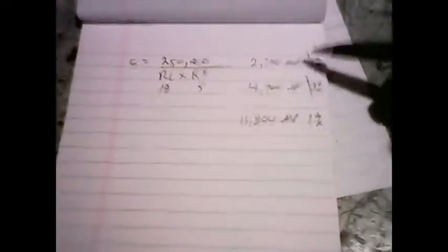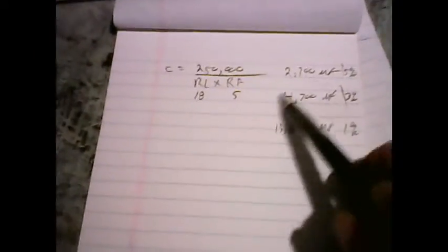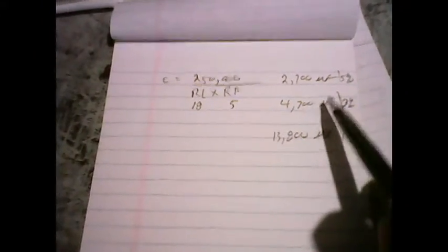So it looks like if I can get a capacitor around a 4,700 microfarad range, it would be nice for 3% ripple factor.